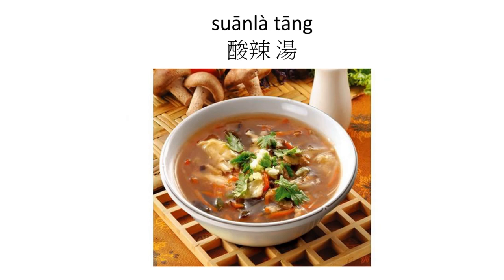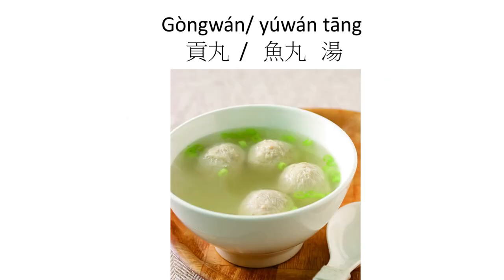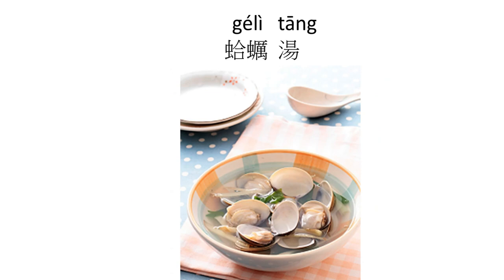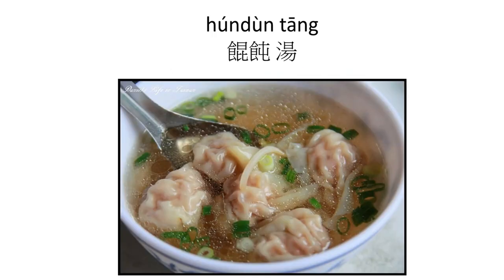酸辣湯 — 酸 means sour, 辣 is spicy, and 湯 is soup, so it's hot and sour soup. You usually find it in dumpling shops. There's also 魚碗湯, fish bowl soup, where 魚 is fish. And 蚵仔湯 is oyster clear soup — 蚵仔 is actually the Taiwanese pronunciation; in Mandarin Chinese we say 蚵, but in Taiwan we tend to say it the Taiwanese way.